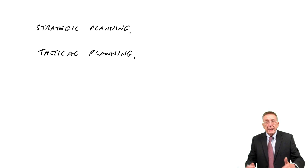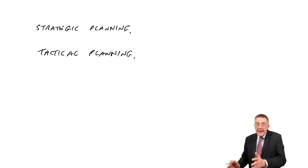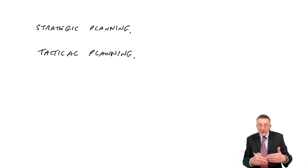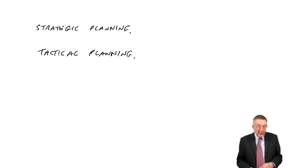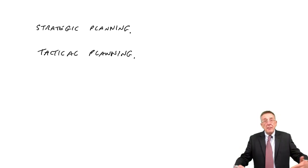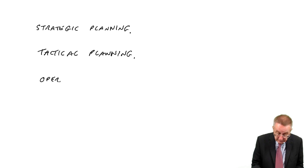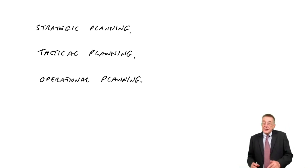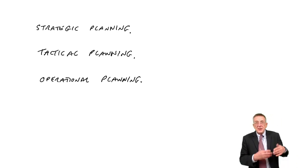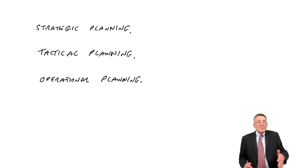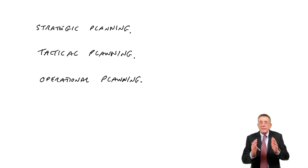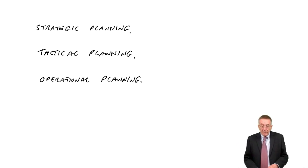We do it in order: strategic planning decides we're going to produce a new product, then we can do more detailed plans as to what's involved over the next year — what resources, staff, and materials we'll need. Having done that, we need day-by-day decisions, which is operational planning. We've done our budgets for next year, so we know how many units we're planning to produce in January and February. But day-by-day we've got to make decisions like which supplier to choose or how many hours of work we need tomorrow. These are very short-term, day-by-day decisions.